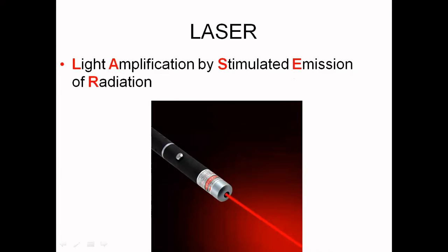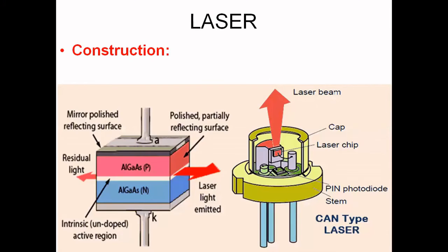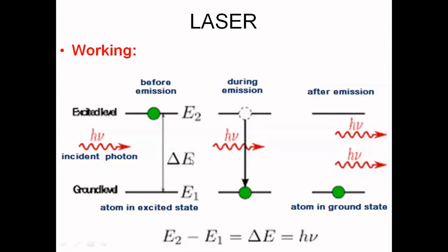Next is laser. Laser stands for Light Amplification by Stimulated Emission of Radiation. Its principle is stimulated emission. This also has n-type aluminum gallium arsenide and p-type aluminum gallium arsenide. The difference is that the principle here is stimulated emission rather than spontaneous emission. This forms a P-I-N structure. Before emission, the electrons jump to a high energy state, and when a photon is incident on them, they come to the lower energy state releasing two photons. I will show you a video for laser as well so that you can have a better understanding.